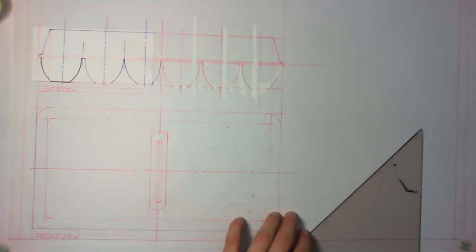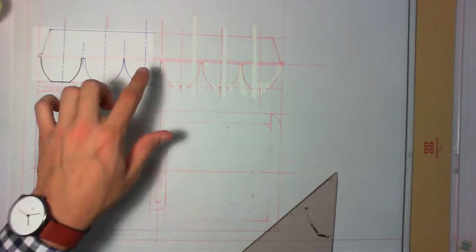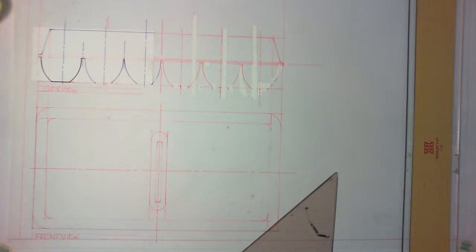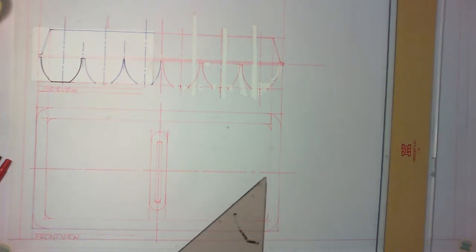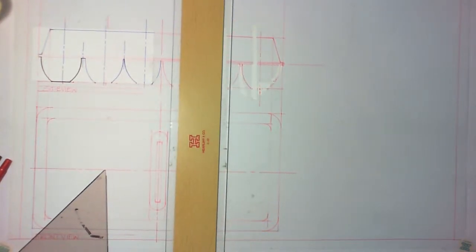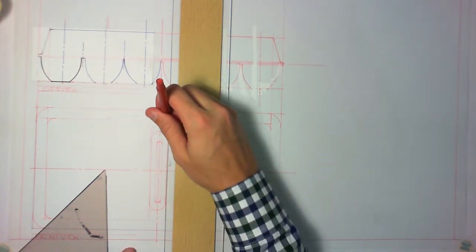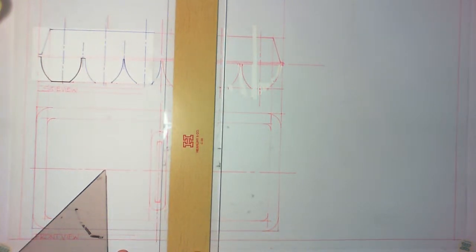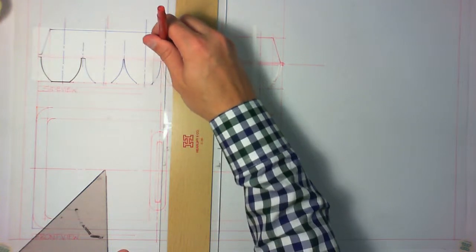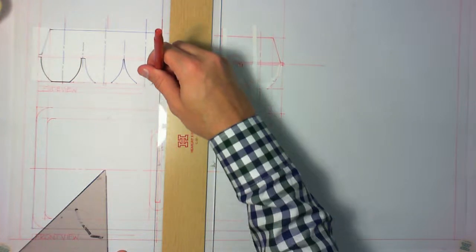We're going to pick up where we left off drawing some hidden lines as well as the side view. Let's go ahead and finish drawing this front view and then we're going to turn these into a section. I'm projecting all these lines to show the bottom of the center of the egg crate.